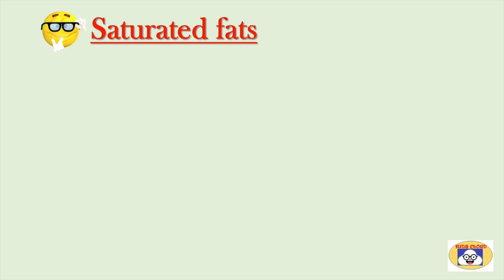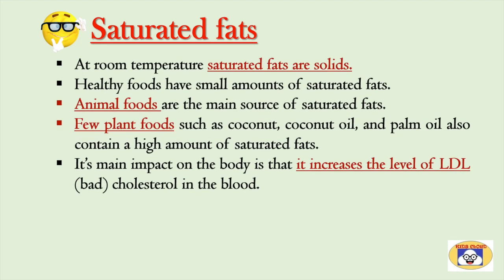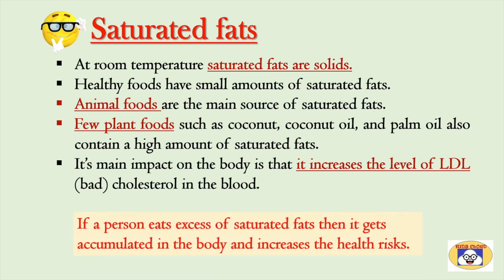The next type is saturated fats. At room temperature, saturated fats are solids. Healthy foods have small amounts of saturated fats. Animal foods are the main source of saturated fats. A few plant foods such as coconut, coconut oil and palm oil also contain a high amount of saturated fats. The main impact on the body is that it increases the level of LDL — that is bad cholesterol — in the blood. If a person eats excess saturated fats, it gets accumulated in the body and increases health risks.